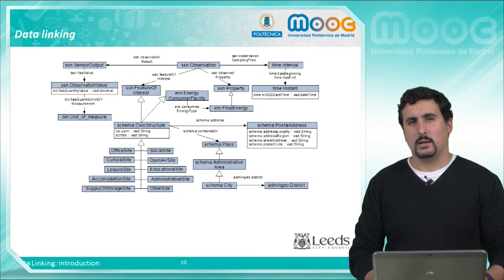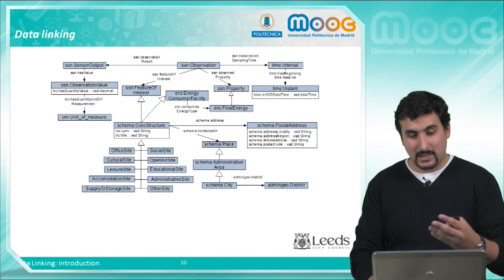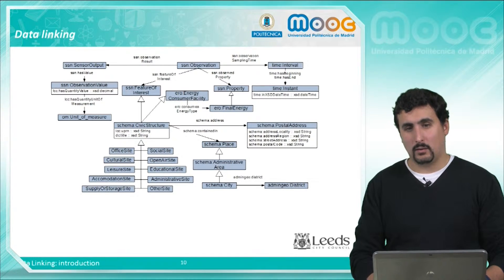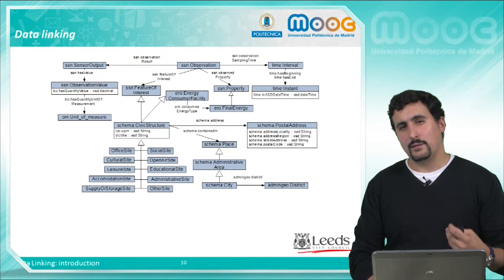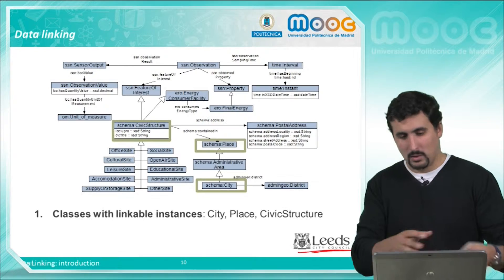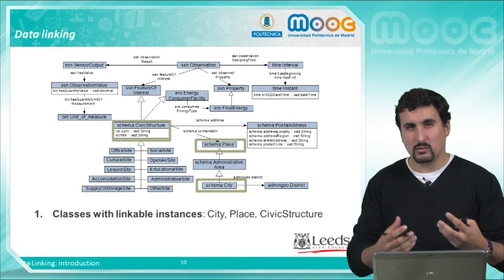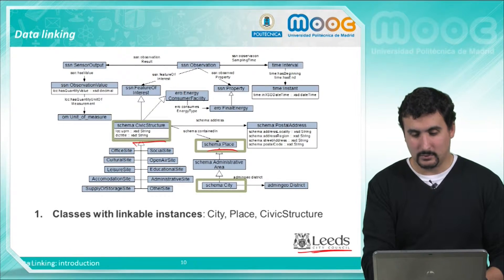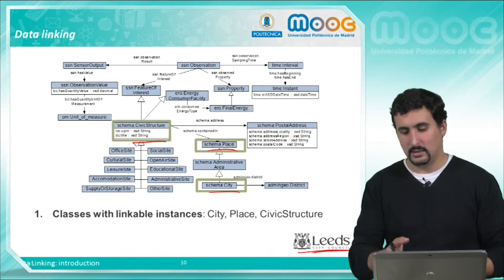Let's see how we can implement the linking process using an example. Here in this slide we see the schema modeling buildings and energy consumption as described by the open data portal of the city of Leeds. The first thing we need to do is identify the classes with potential matches. We see things such as observations and time intervals, which are not really easy to match, but we also have civil structure, places and cities, which are quite popular. So we will select city, place and civic structure.